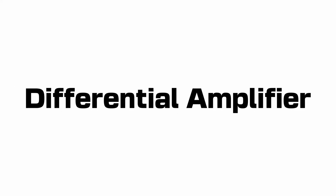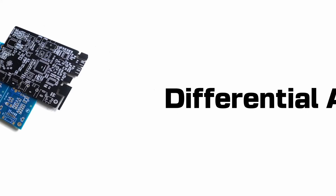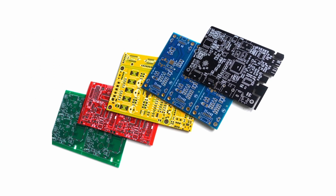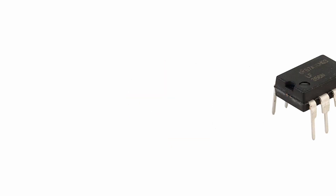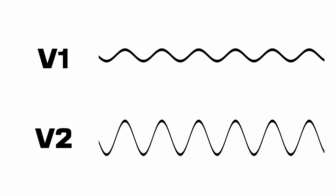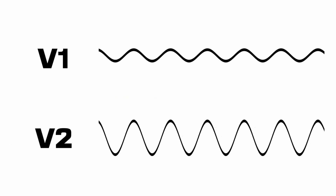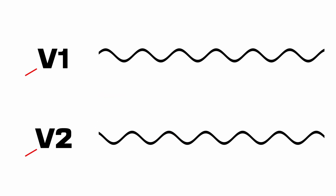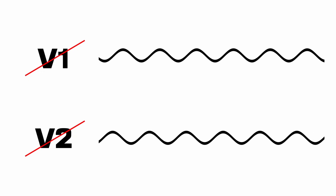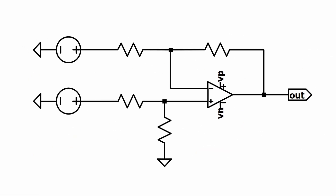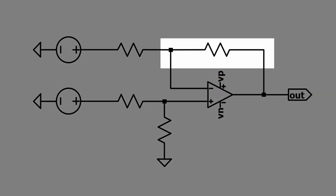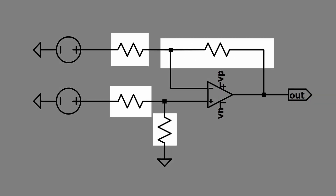A difference amplifier, or differential amplifier, is an electronic circuit built using an op-amp that amplifies the voltage between two input signals while rejecting any voltage common to both inputs. A typical configuration has a negative feedback loop and four total resistors.